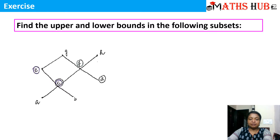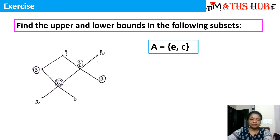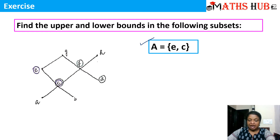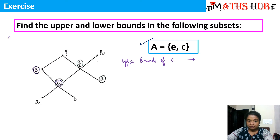We need to calculate the upper bounds and the lower bounds in these subsets. The Hasse diagram is given to us. The first subset given to us is {e, c} — that means in our subset A we only have these two elements. We need to find who are the upper bounds of this subset. The technique is: first, we calculate the upper bounds of each element, and then we see who are common to them. Let us see who are the upper bounds of the element e.